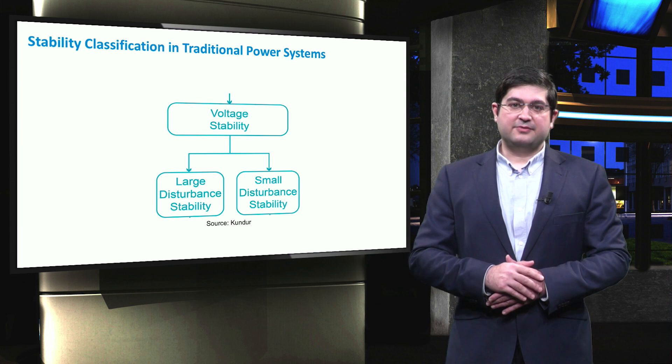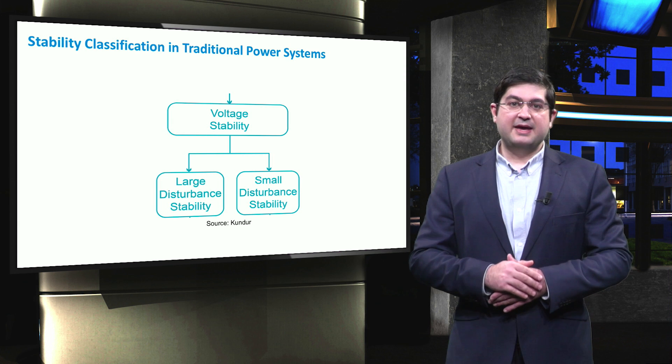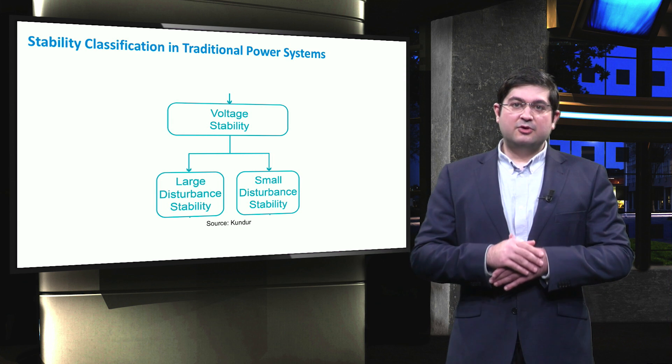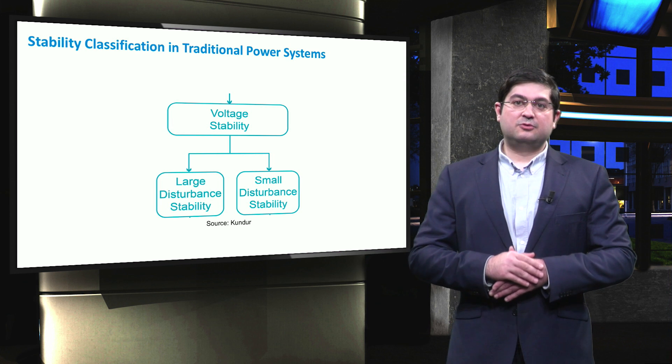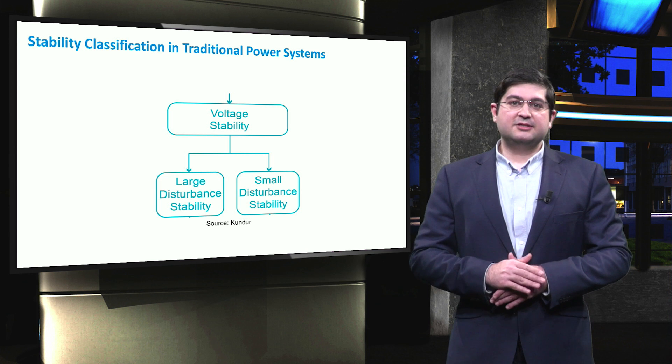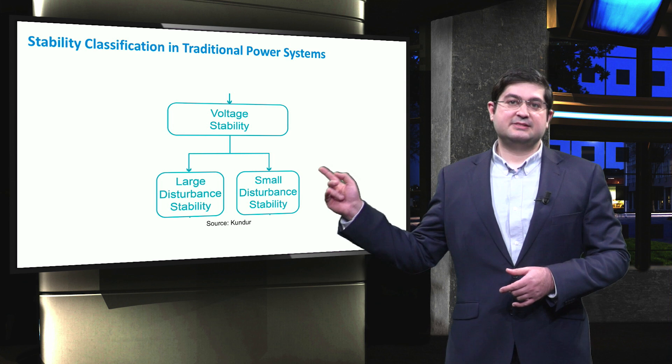Frequency stability can be considered for both short and long time scales. To operate the electrical grids in a stable manner, not only the frequency shall remain within allowable limits, but also voltage shall be stable and controlled within maximum and minimum allowable limits. Voltage stability can be grouped into large and small disturbance stability.